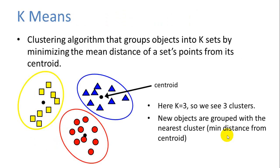K-means is a clustering algorithm. And it groups objects into K sets. In this case, we can see three different sets, a yellow, blue, and red set. So here K is equal to three. It groups these objects into K sets. And it minimizes the average distance of the points in that set from the centroid. So we calculate a centroid for each set. And we try to minimize this centroid by assigning objects to this set.